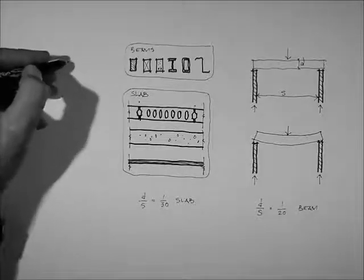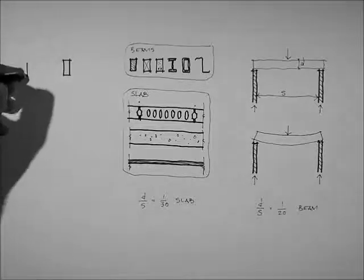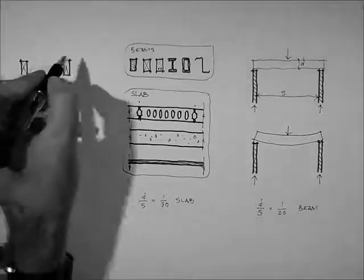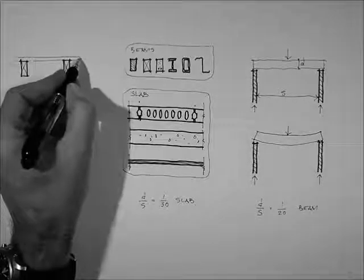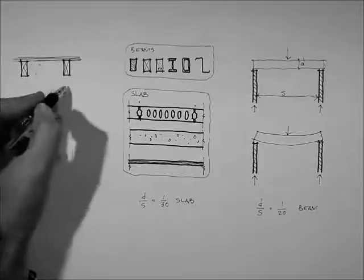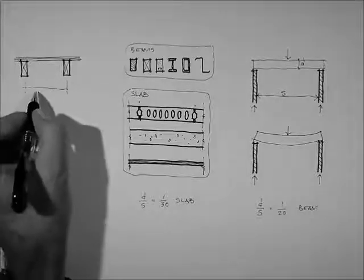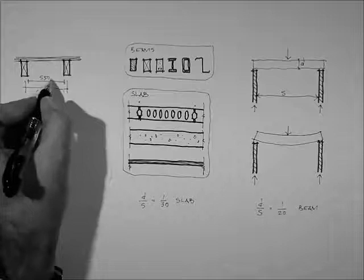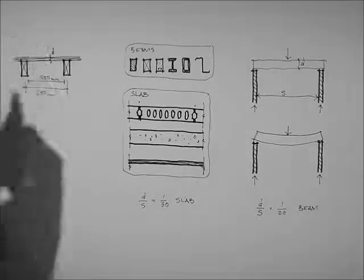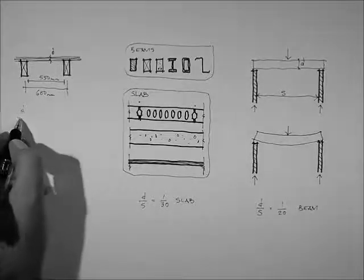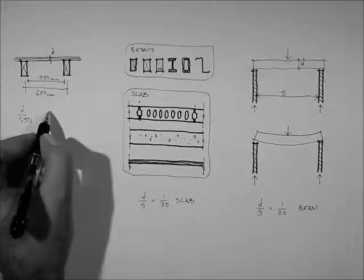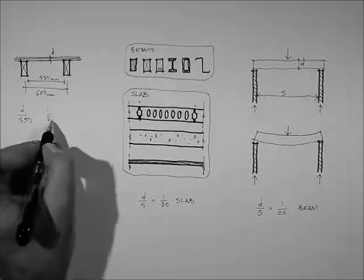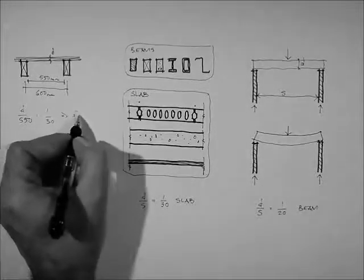So some examples of these two principles. Here's a domestic one, a pair of floor joists with plywood or timber floorboards. A typical joist center is 600mm which will be roughly 550 between them. D over 550 for a slab type material like plywood or a floorboard, so 30th, and therefore D equals 18mm.